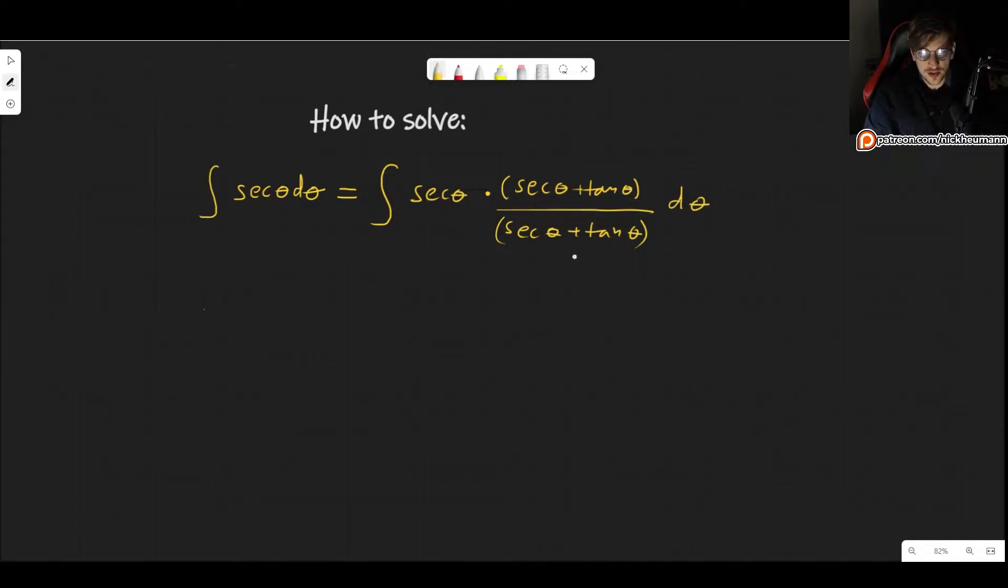Now why did we choose to do this? The reason is because we are setting up a change of variables. So we want to use another variable, let's say w for example, and w will be what we just used. So secant of theta plus tangent of theta.